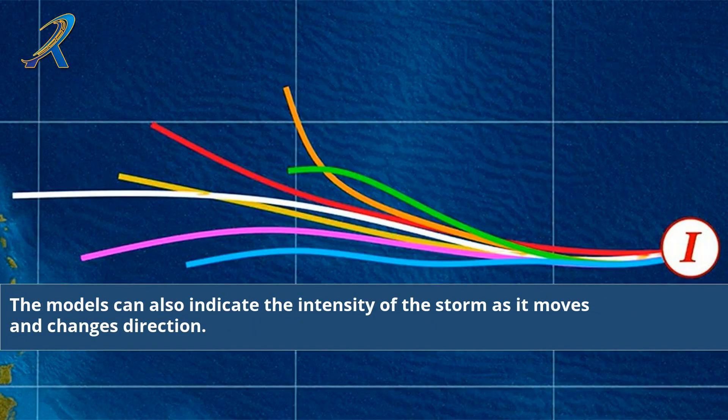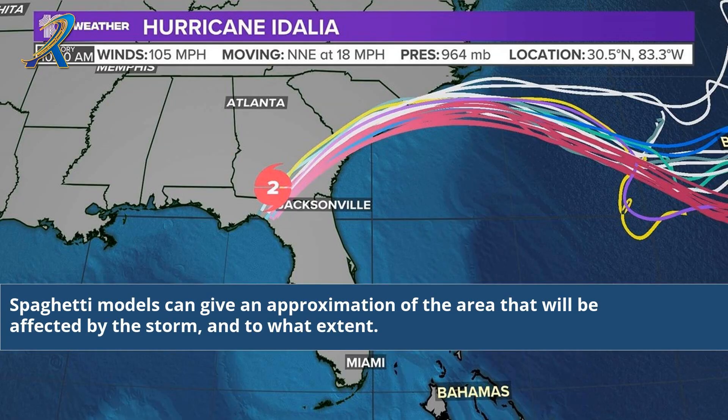The models can also indicate the intensity of the storm as it moves and changes direction. Spaghetti models can give an approximation of the area that will be affected by the storm, and to what extent.